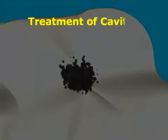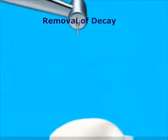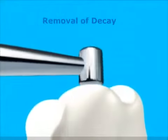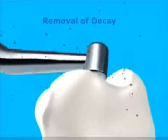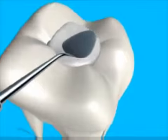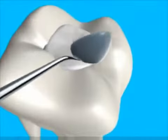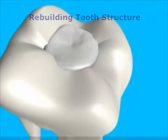Treatment of a cavity generally consists of two steps: removing the decayed portion of the tooth and rebuilding the missing tooth structure with a suitable filling material. Under local anesthesia, a high-speed dental drill is used to remove the decay and prepare the tooth for the filling.